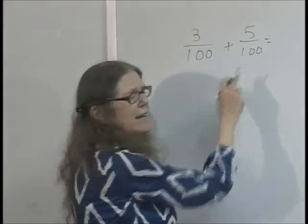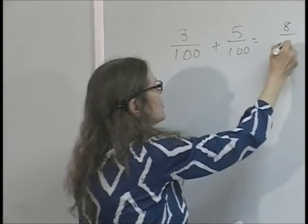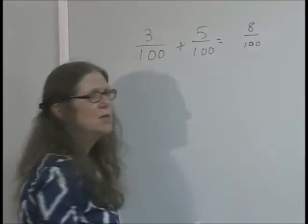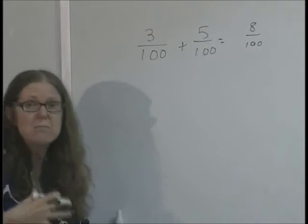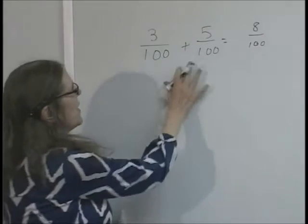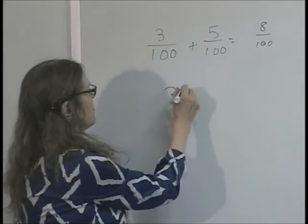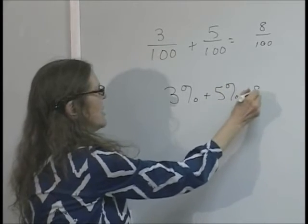Well, that would be adding fractions with the same denominator. We add the numerator, and we just use that denominator. So that would be eight hundredths of the cake would have been eaten by me and my friend's families. Another way of writing this is three percent plus five percent equals eight percent.